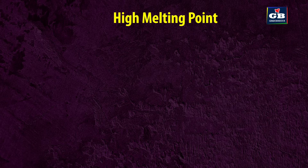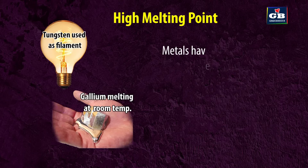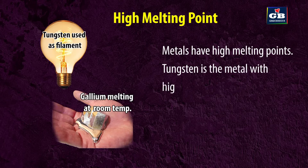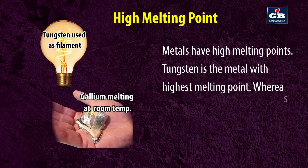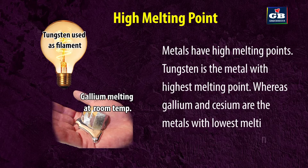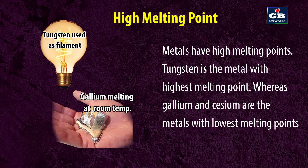High melting point. Metals have high melting points. Tungsten is the metal with the highest melting point, whereas gallium and cesium are the metals with the lowest melting points.